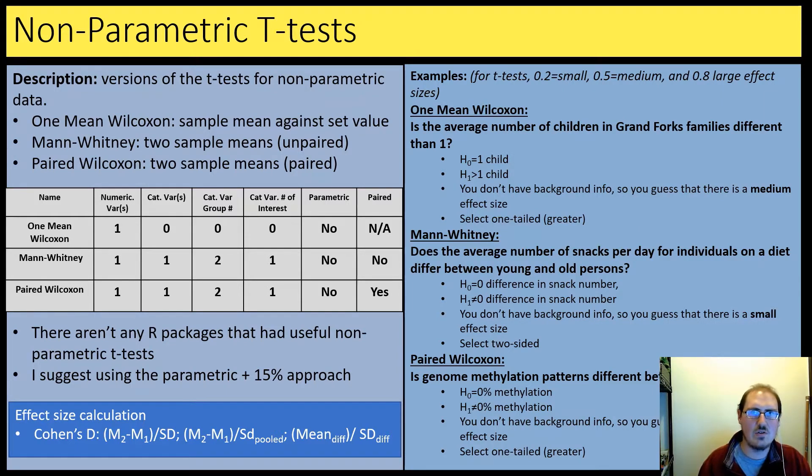Hello and welcome back to the next segment in sample size calculation for R. Here we'll be covering what I call the yellow tests. They're essentially non-parametric versions of the tests we've already seen in some of those green slides. So non-parametric tests, just as a reminder, it's for non-normally distributed data. So we can't use those parametric tests for that kind of data.